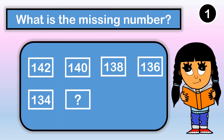What is the missing number? Here we have one hundred forty-two, one hundred forty, one hundred thirty-eight, one hundred thirty-six, one hundred thirty-four. I know that I am skip counting by two, so my missing number is one hundred thirty-two.